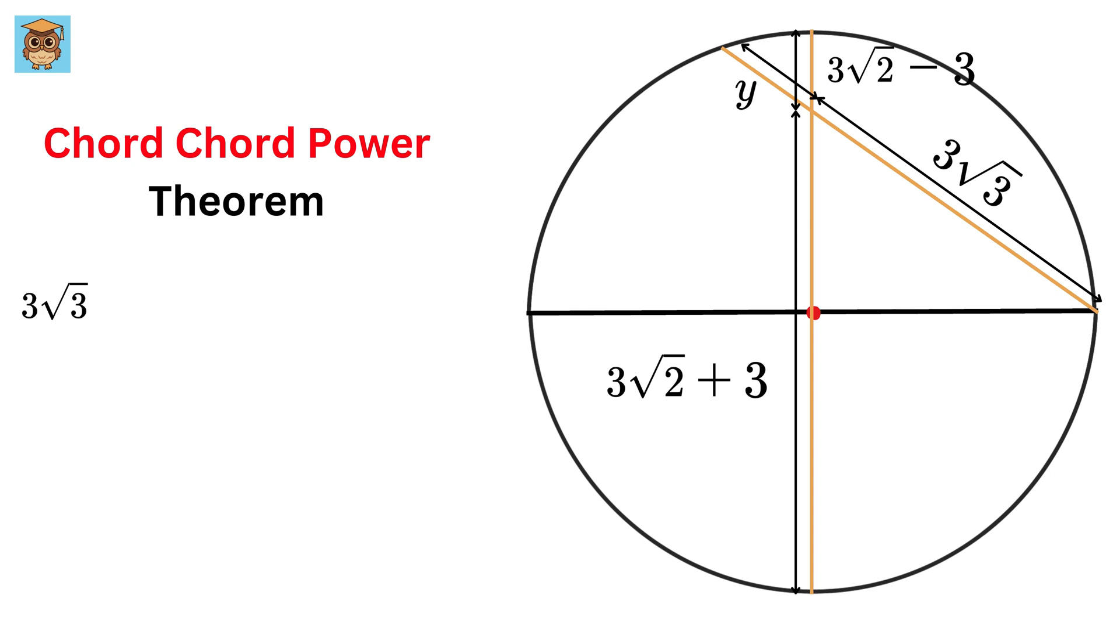We get 3 root 3 times y equals 3 root 2 plus 3 times 3 root 2 minus 3. This is of the form a plus b times a minus b and thus it will be the same as 3 root 2 whole square minus 3 square or 18 minus 9 or 9. So y equals 9 over 3 root 3 which will be the same as 3 over root 3 or root 3.